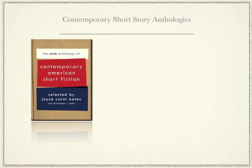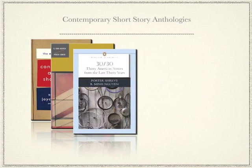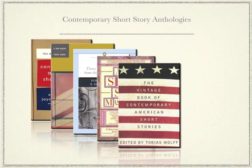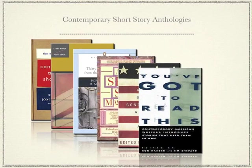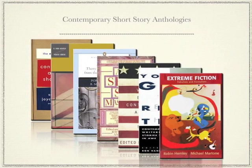In the years since Castle helped me, the more contemporary short stories I've read, the more hungry and infatuated by the form I've become. I've probably read every contemporary anthology out there cover to cover, and more than once. The best of these, I think, are Joyce Carol Oates' Contemporary American Short Fiction; Porter Shreve and Bich Minh Nguyen's The Contemporary American Short Story; and 30/30: 30 American Stories from the Last 30 Years; Raymond Carver and Tom Jenks' American Short Story Masterpieces; Tobias Wolff's The Vintage Book of Contemporary American Short Stories; and Ron Hansen and Jim Shepard's You've Got to Read This: Contemporary American Writers Introduce Stories That Held Them in Awe. But there are many more, all deserving of a close read, some of them that push the boundaries of traditional form, such as Robin Hemley and Michael Martone's Extreme Fiction: Fabulists and Formalists, which I'll say something about in a moment.